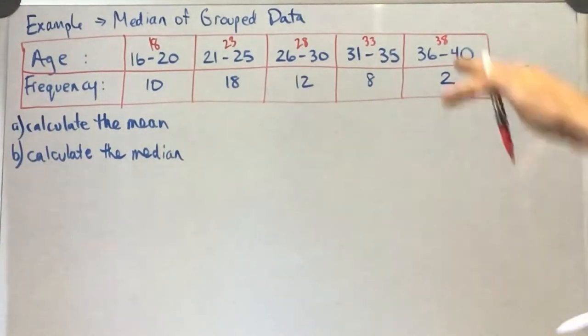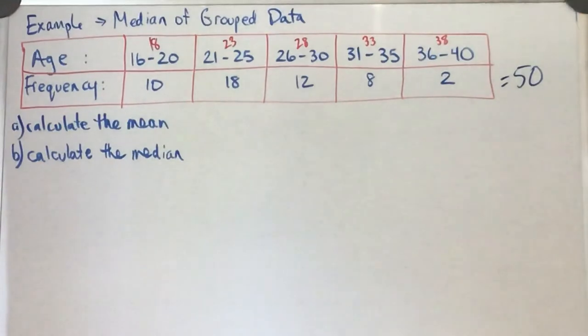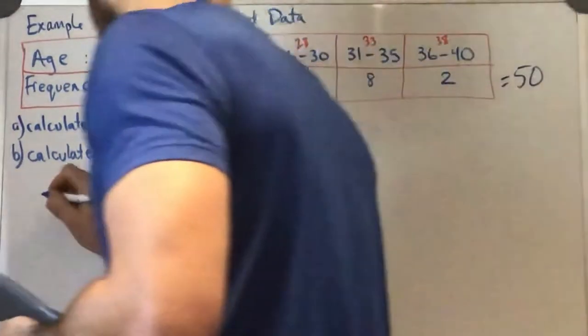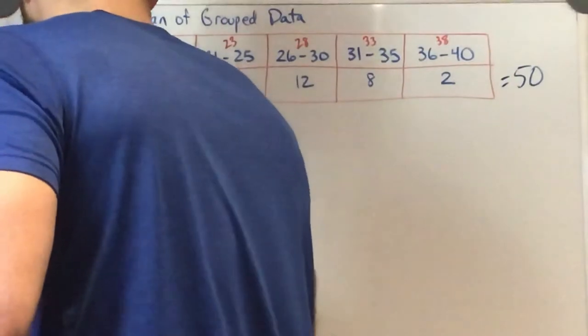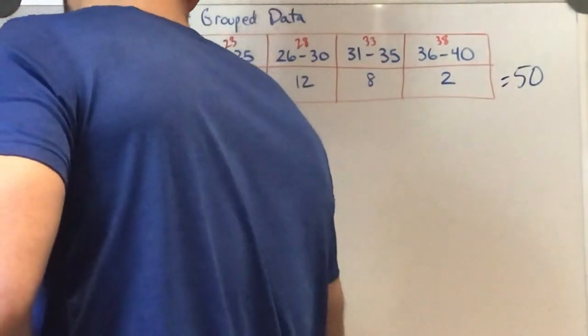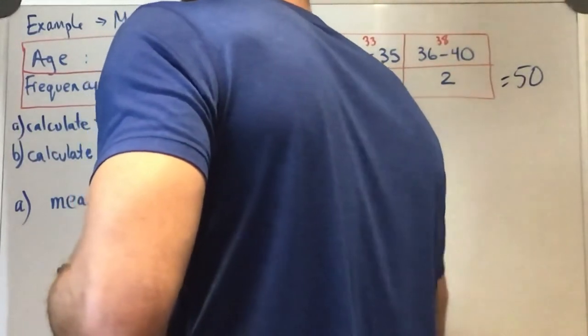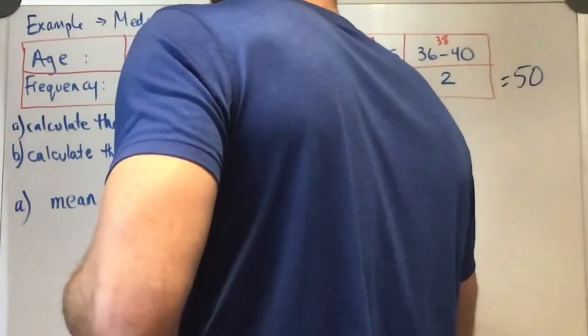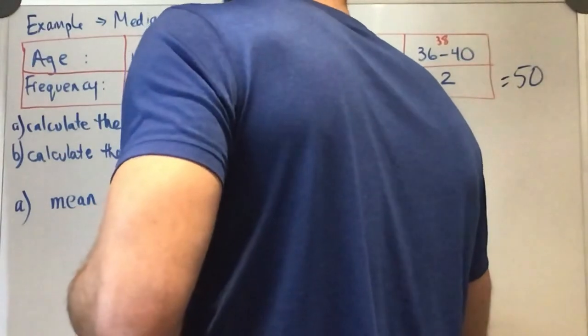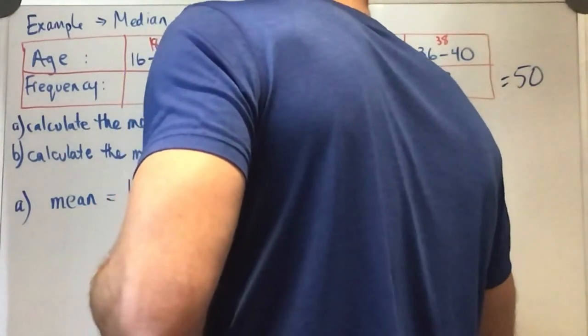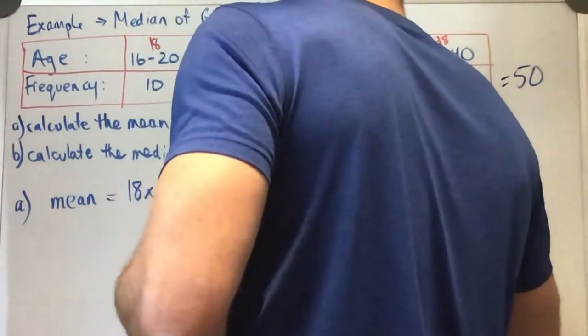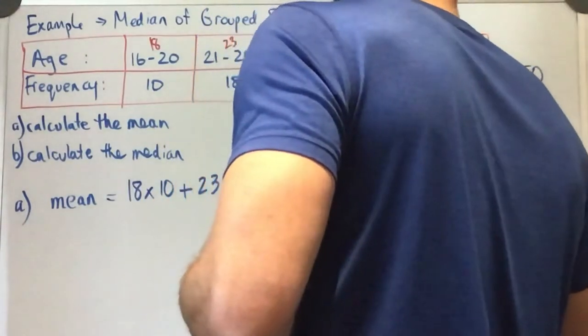For each interval, we're going to use the midpoint of the interval and the frequency to get the best estimate possible with this table of data. Okay, so what is that going to look like for our mean calculation? We're going to have 18 times 10 plus 23 times 18 plus 28 times 12 plus 33 times 8.